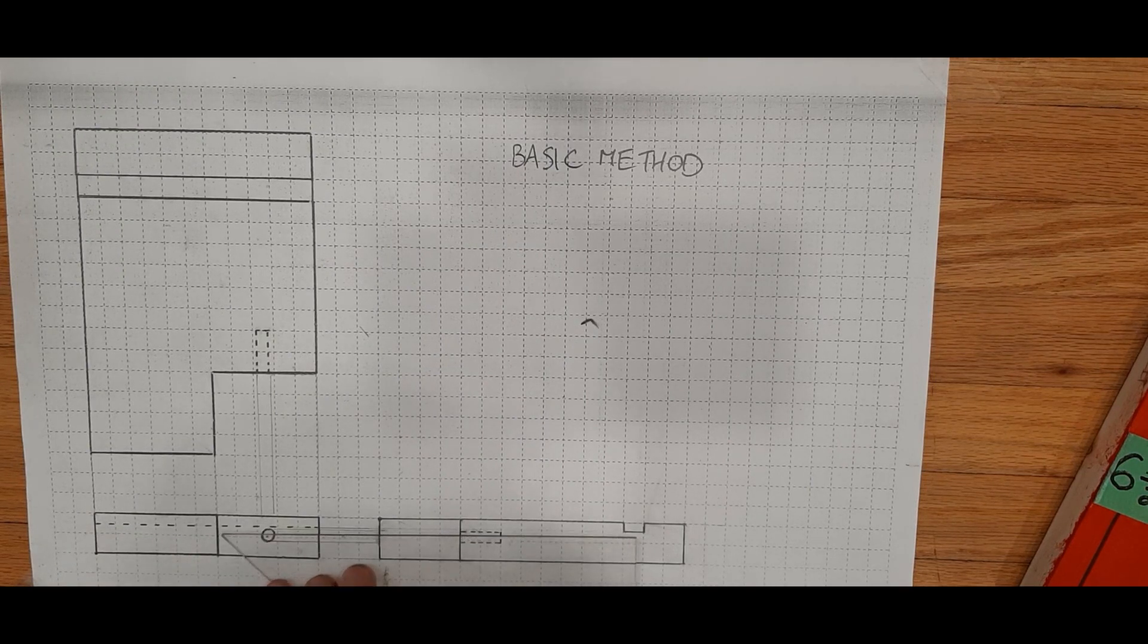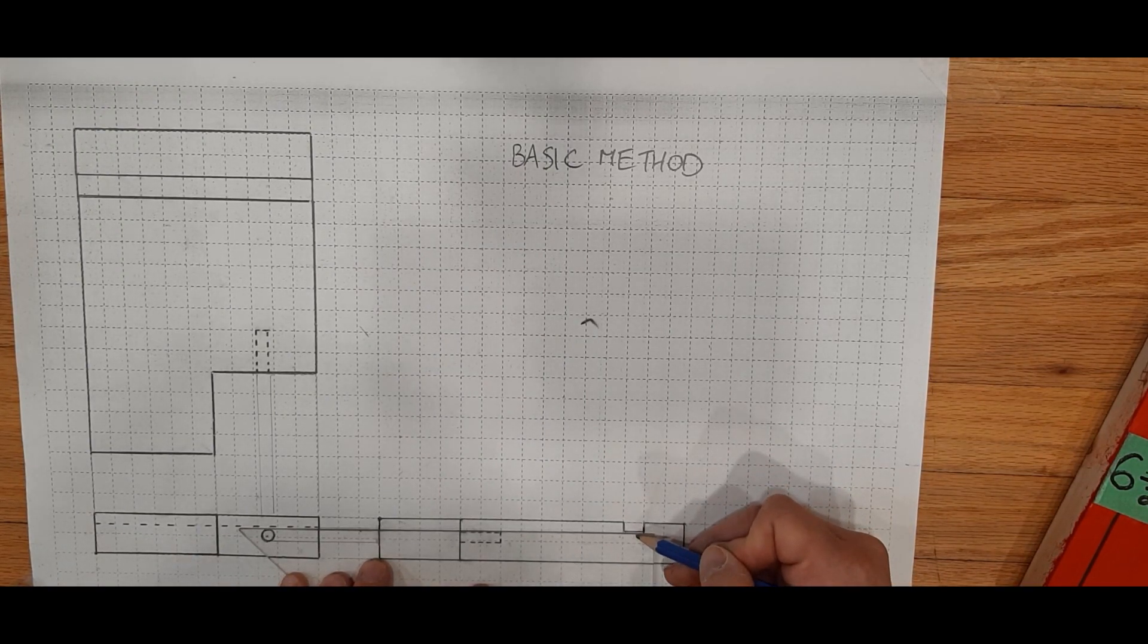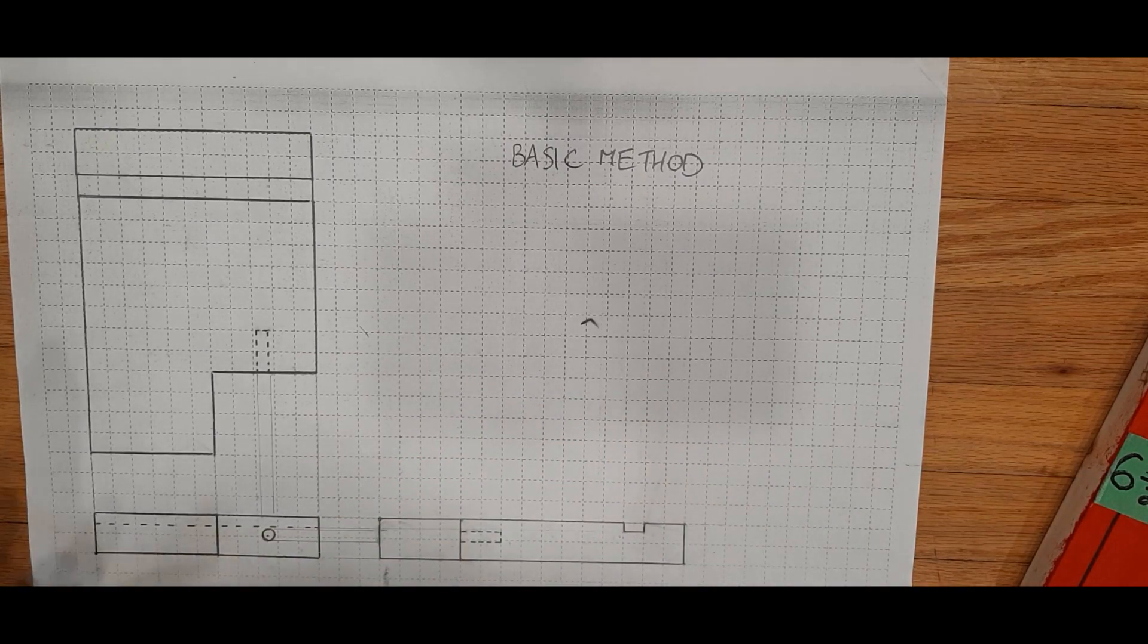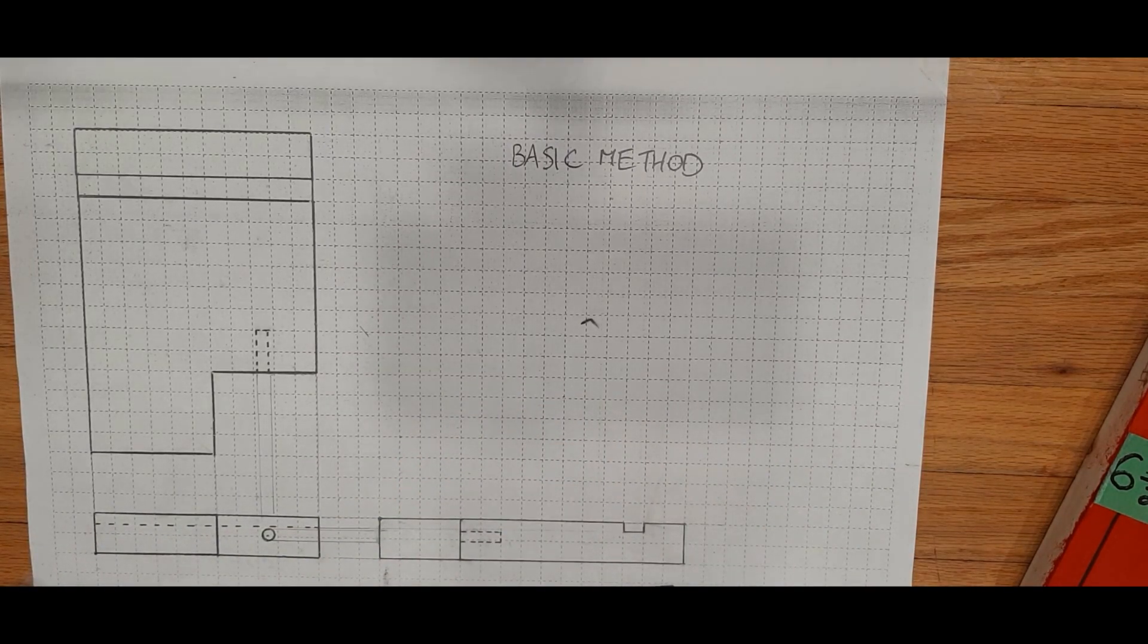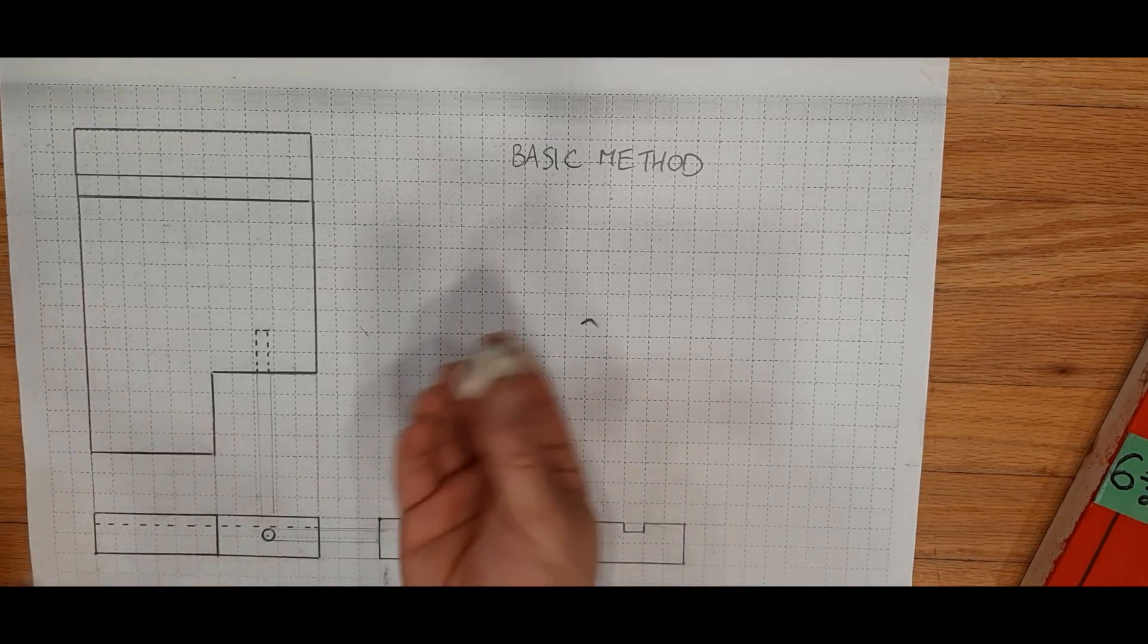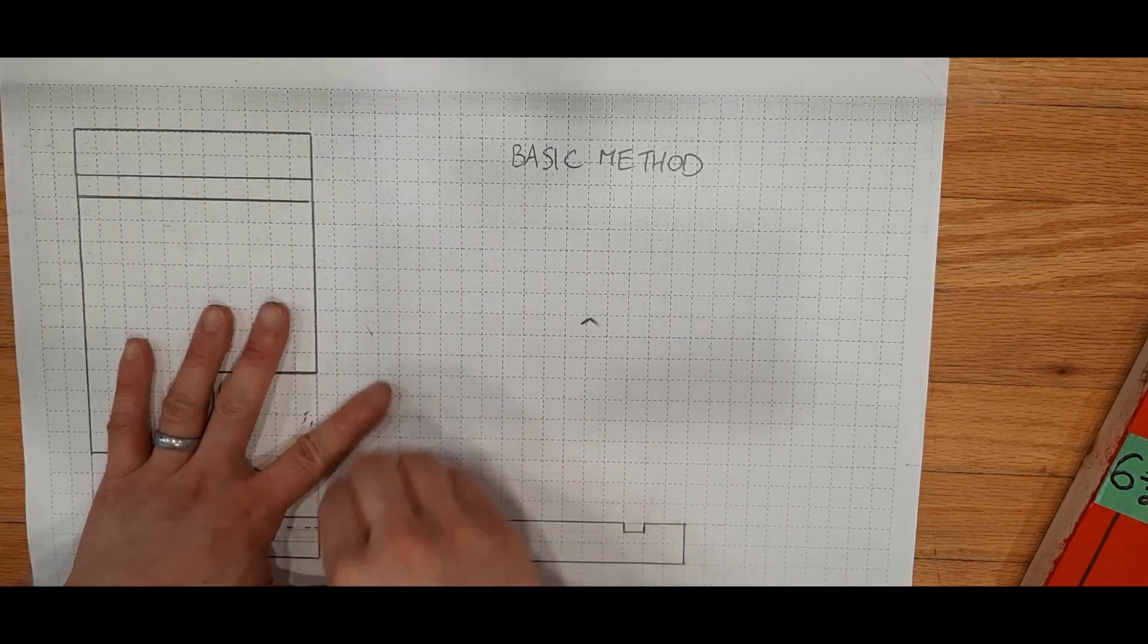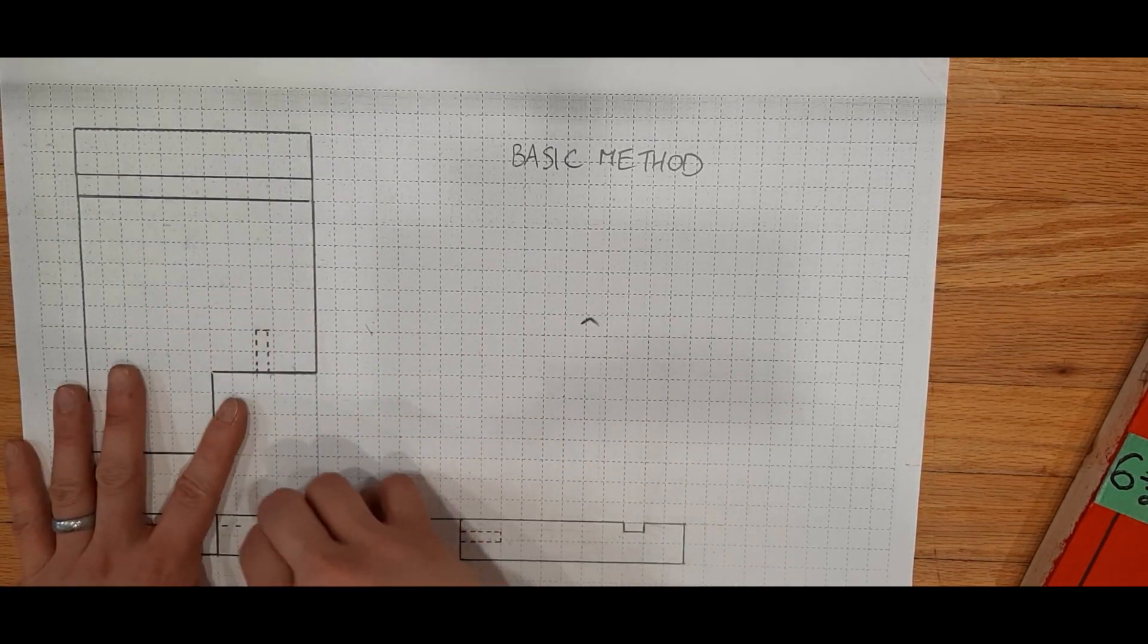Again, you know you've done a good job when the bottom of that slot lines up with the hidden line. And of course, it's a dotted line. At this point, just for neatness, take your eraser, and erase any of the little projection lines. It just makes things look a little bit neater.